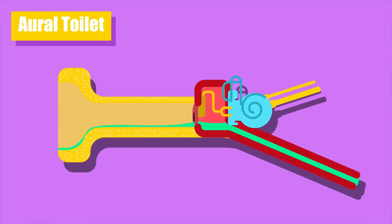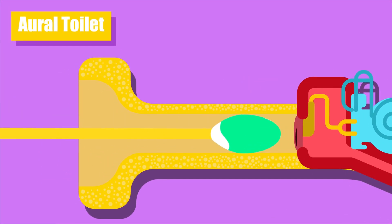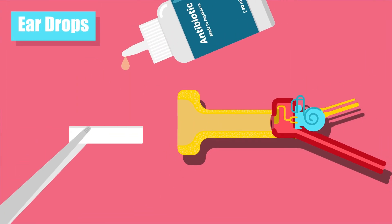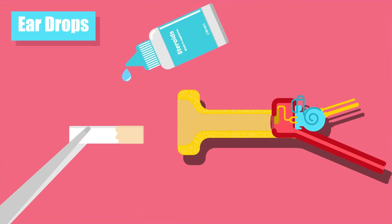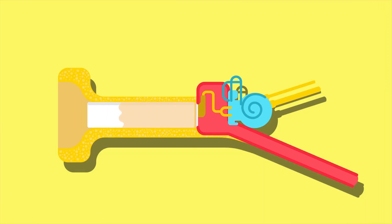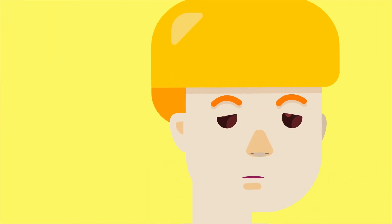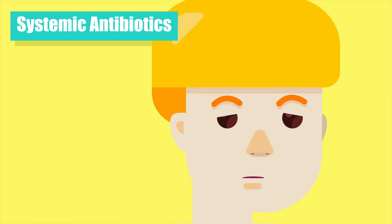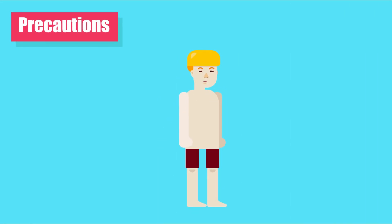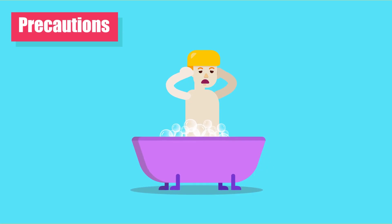CSOM Treatment: (1) Ear Toilet — remove all discharge and debris from the ear. (2) Eardrops — antibiotic eardrops are used, combined with steroids which have a local anti-inflammatory effect. (3) Systemic Antibiotics. (4) Precautions for patient — patients are instructed to keep water out of the ear during bathing, swimming, and hair wash.